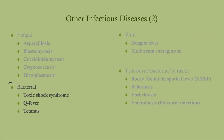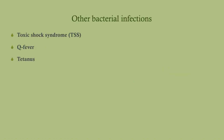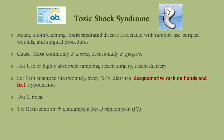We're going to talk about some bacterial diseases, and you're going to see that two of these are actually toxin mediated. We'll talk about toxic shock syndrome, Q fever, and tetanus. Toxic shock syndrome is a life-threatening toxin-mediated disease associated with tampon use, surgical wounds, and surgical procedures. Basically, you get an infection, and that infection is not actually causing the disease — the bacteria that proliferate create a toxin, and that toxin causes the disease.